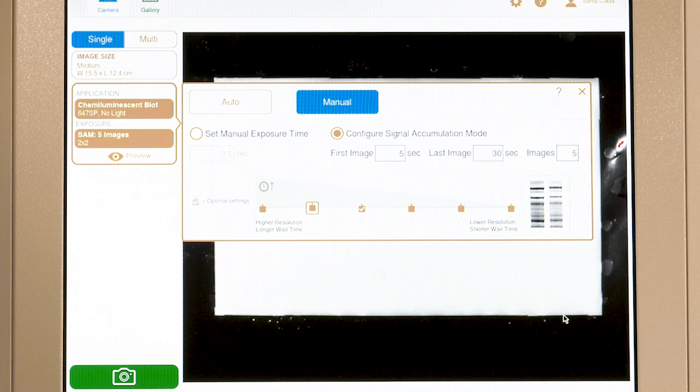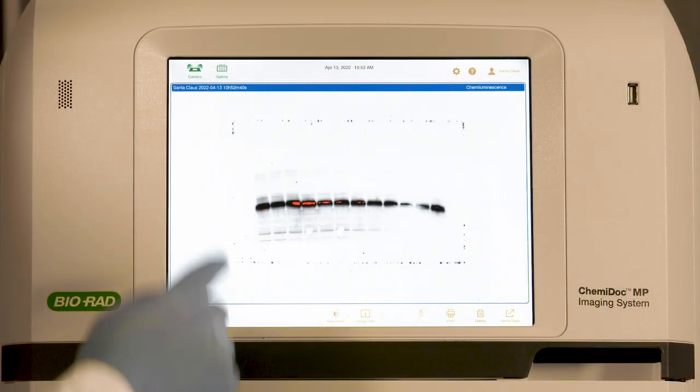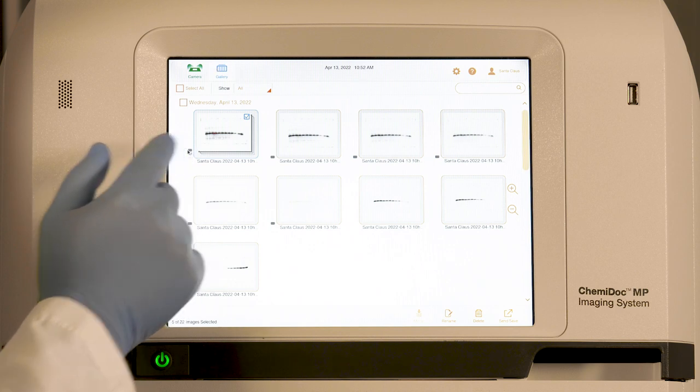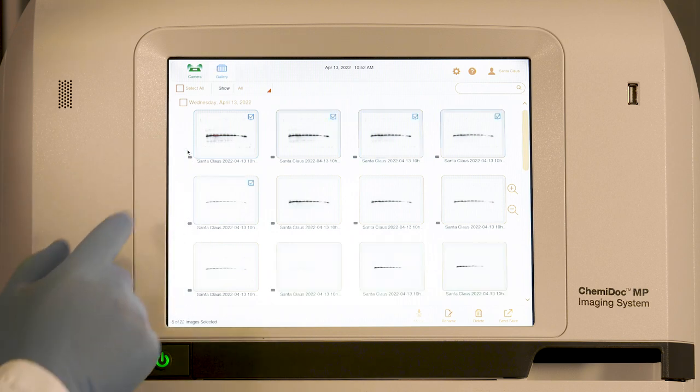For example, let's enter a minimum exposure time of 5 seconds and a maximum of 30 seconds. We'll take 5 images total. The instrument will acquire images at approximately 5, 11, 18, 24, and 30 seconds.